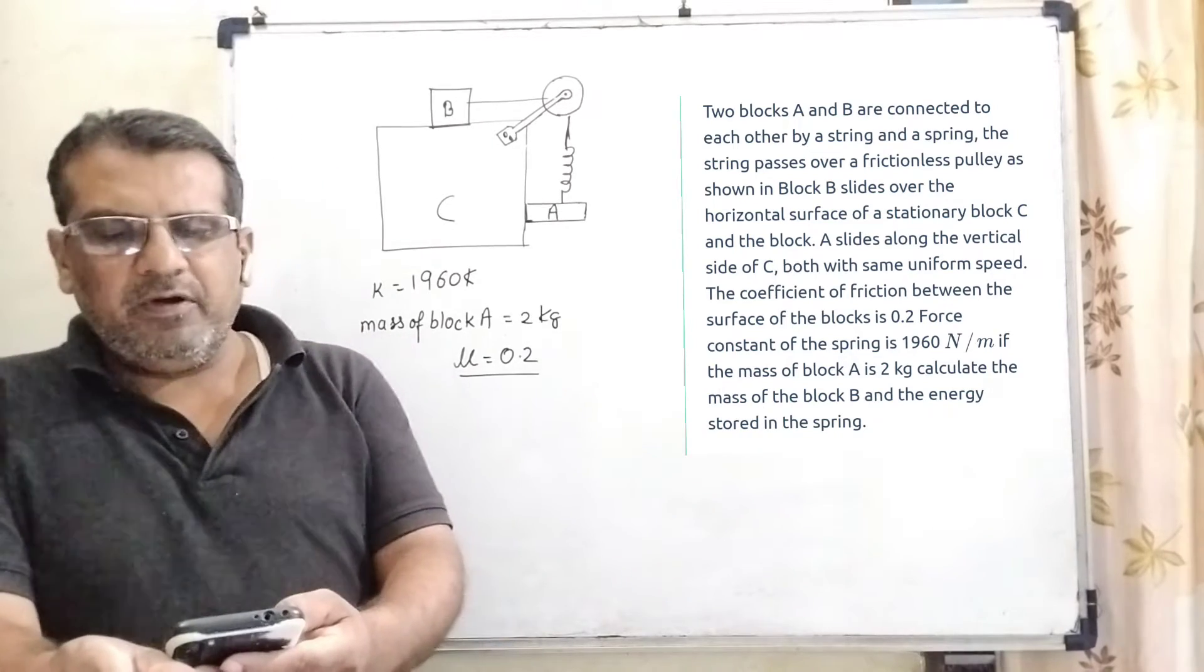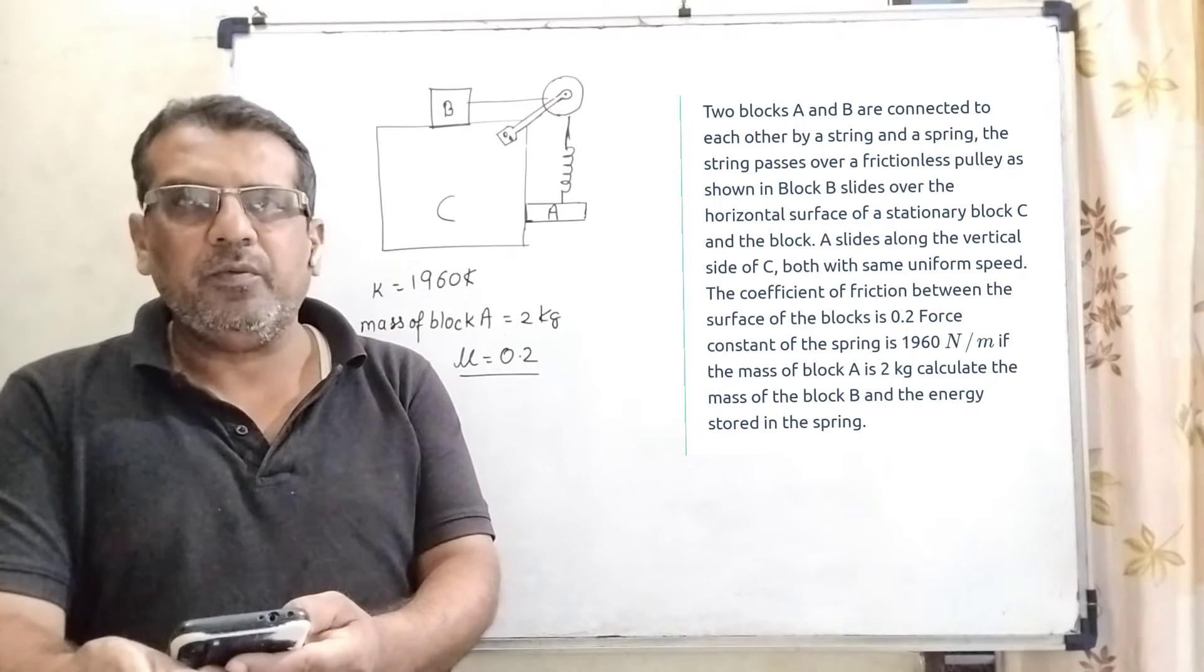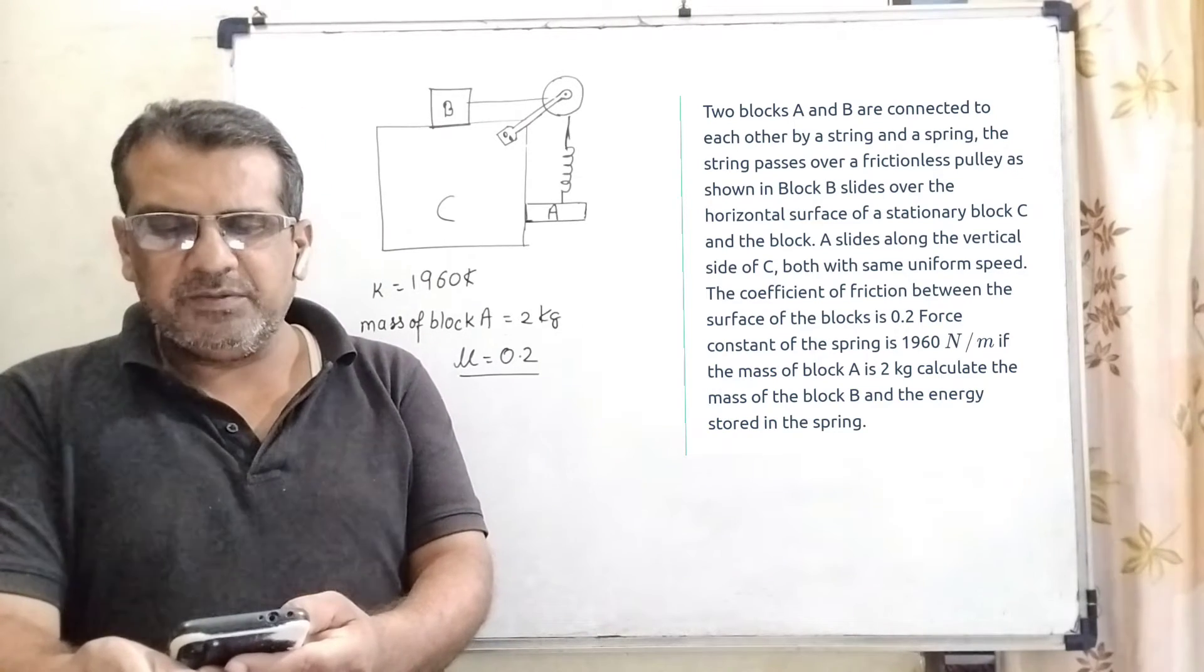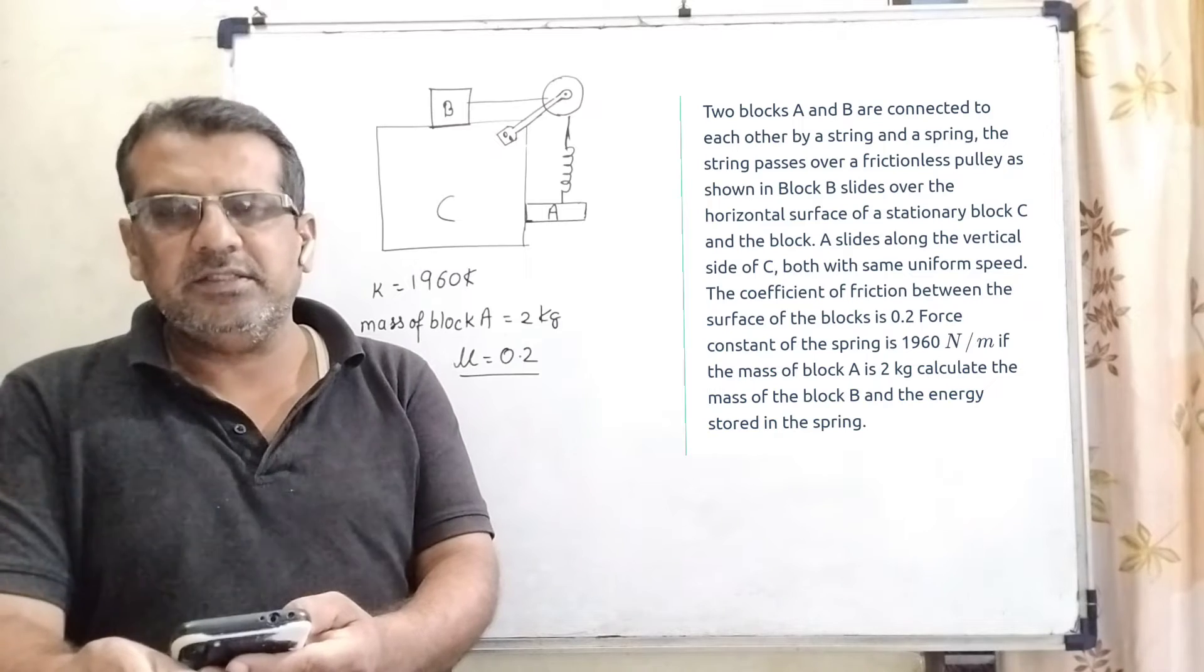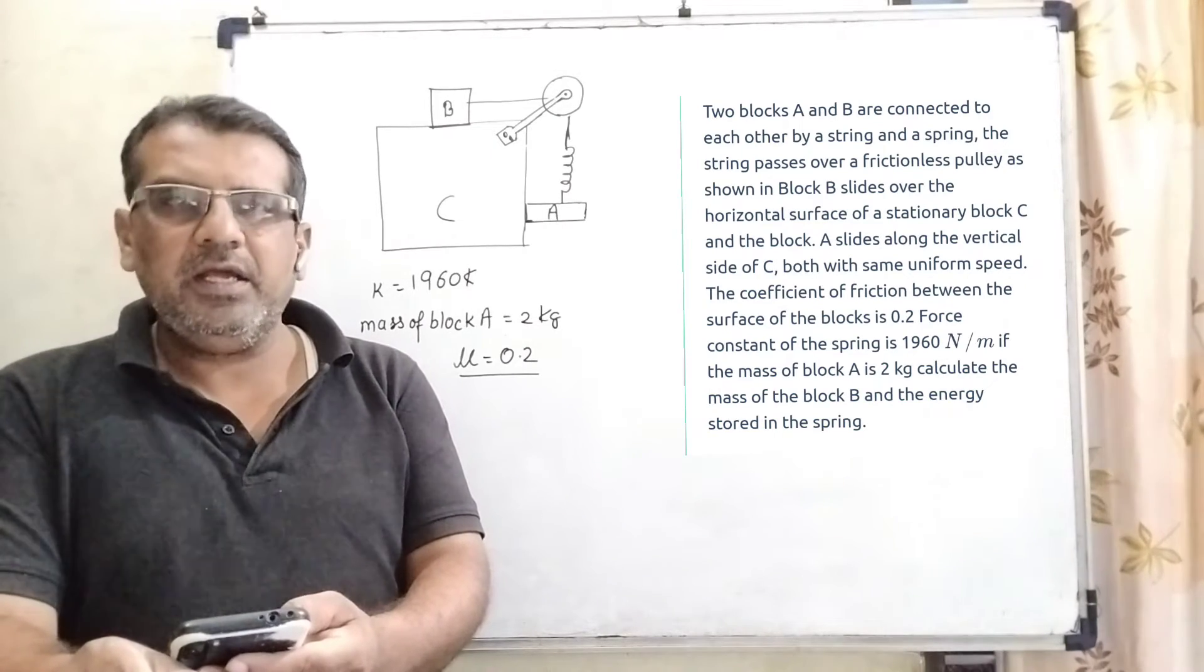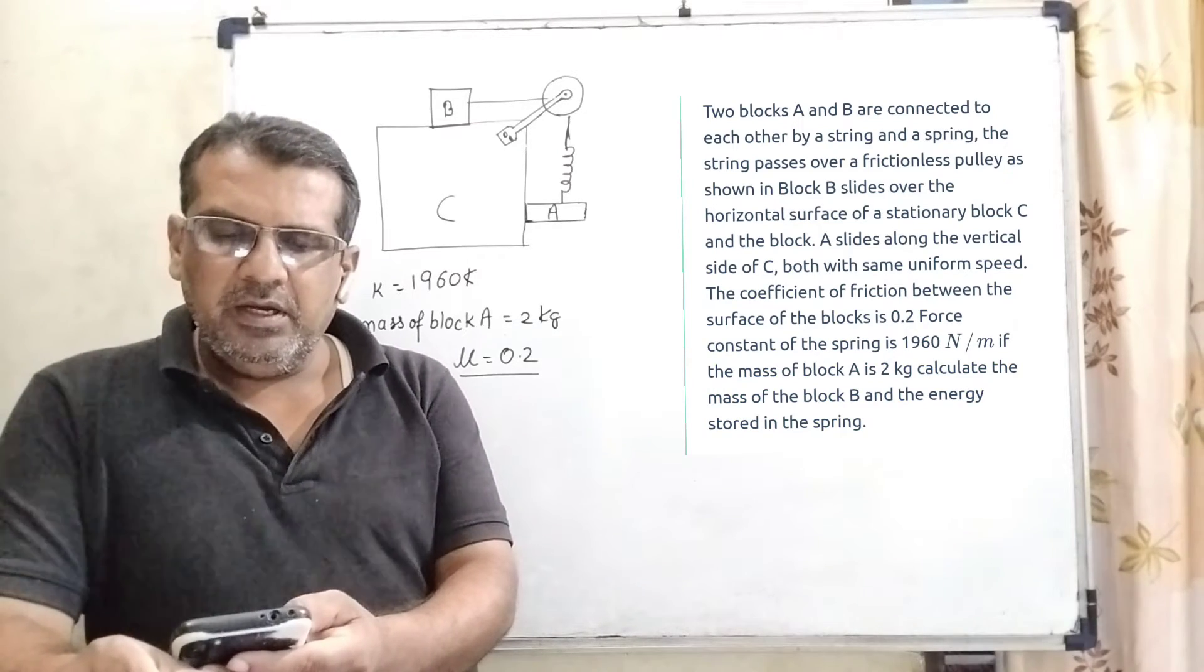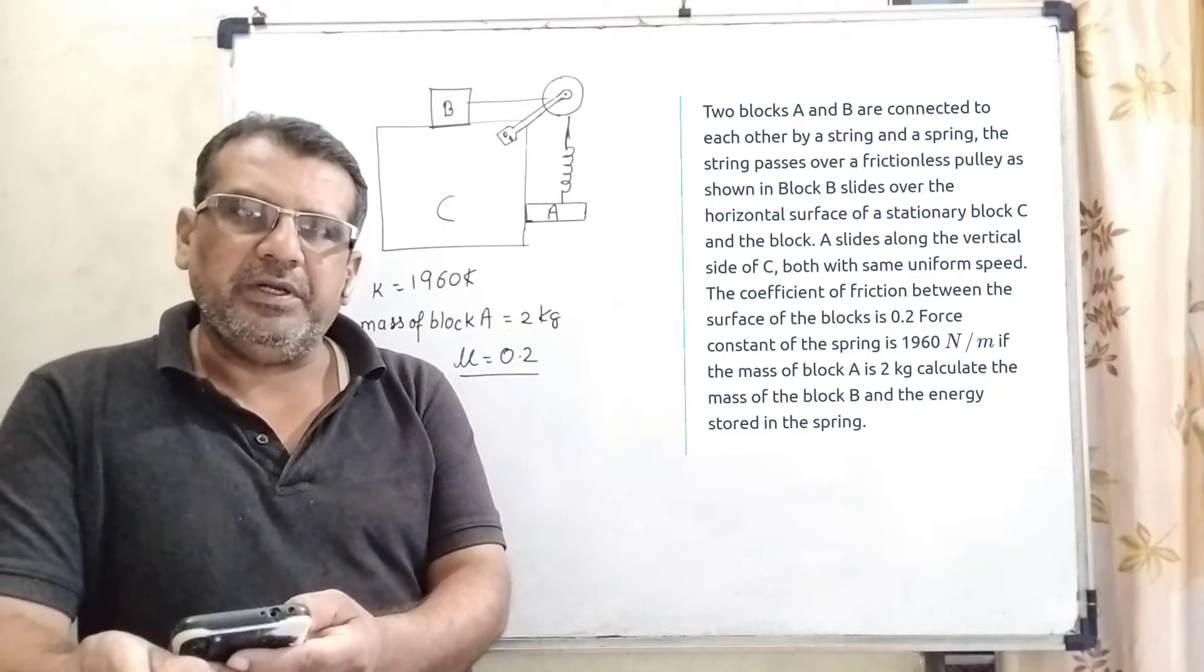Both move with same uniform speed. The coefficient of friction between the surfaces of the blocks is 0.2. The force constant of the spring is 1960 Newton per meter. If the mass of block A is 2 kg, calculate the mass of block B and the energy stored in the spring.